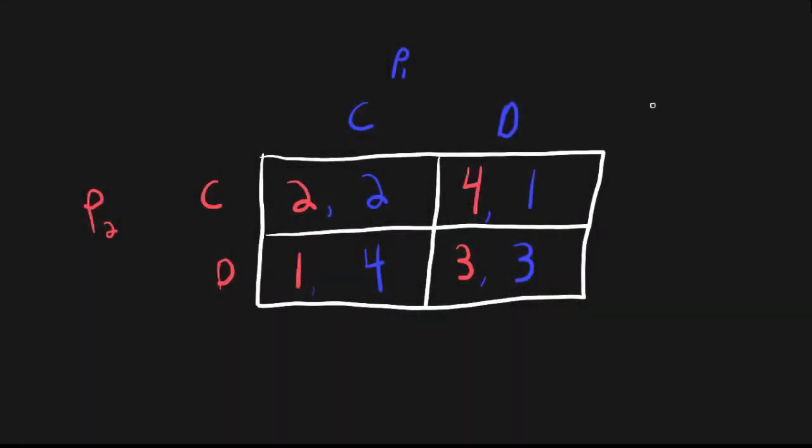Remember in a previous lesson we looked at the Prisoner's Dilemma in a normal form representation. Recall in the game that the scenario is that two people who committed a crime got arrested and need to decide whether or not to confess (C) or don't confess (D). Now we want to see which one of these joint profiles make up a Nash equilibrium.